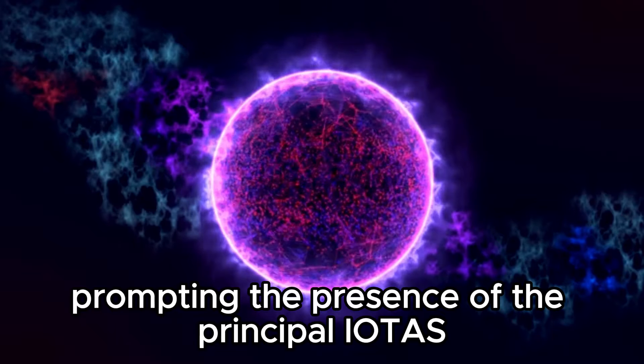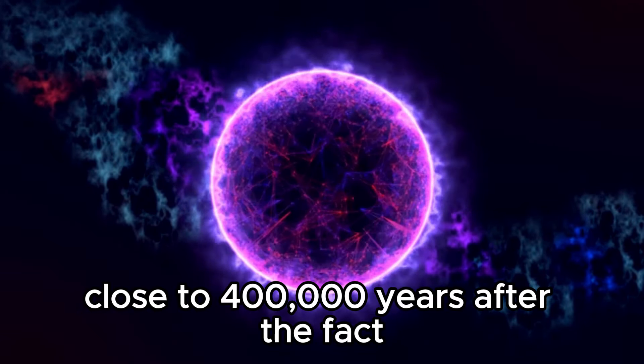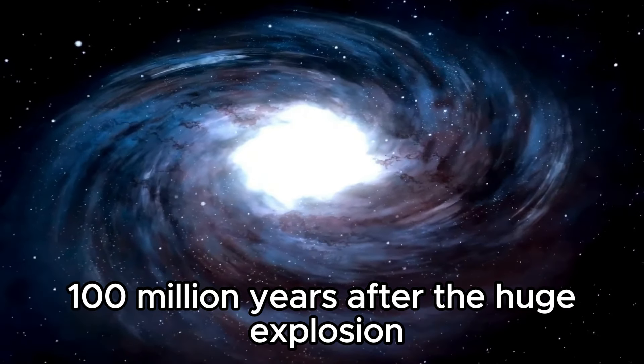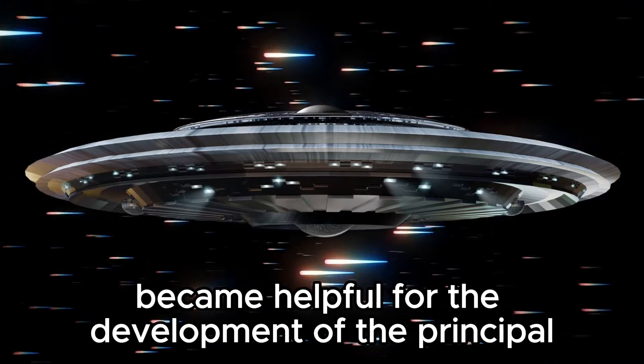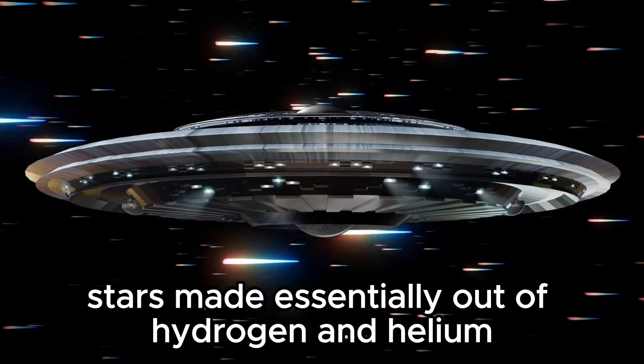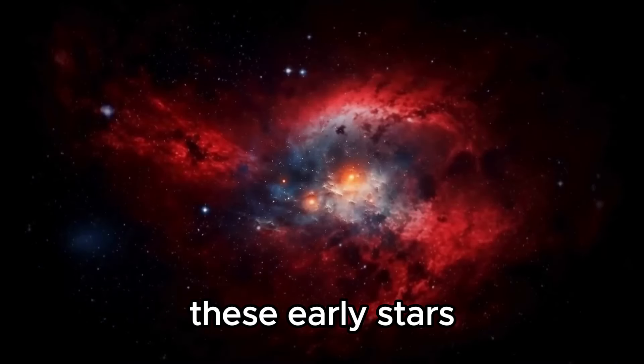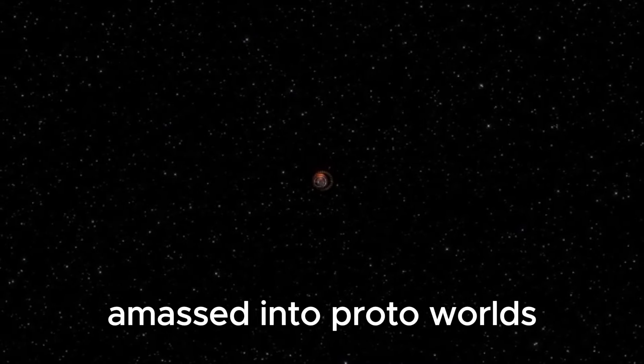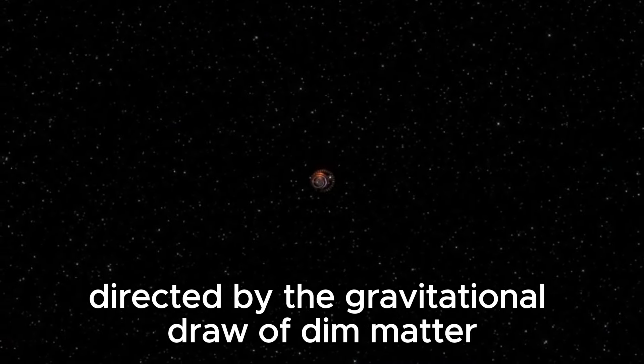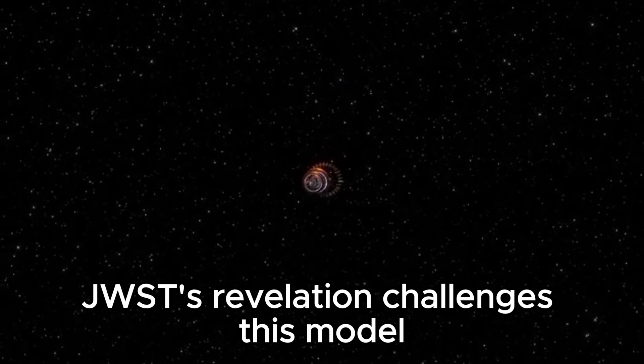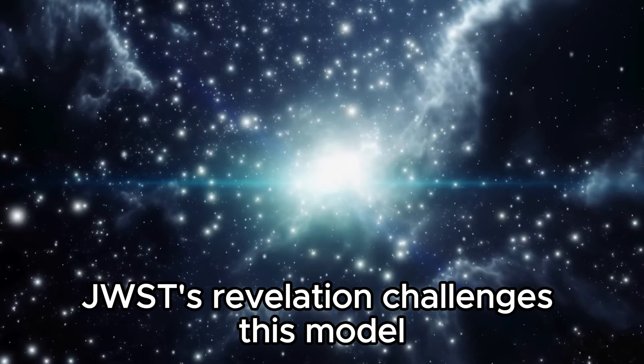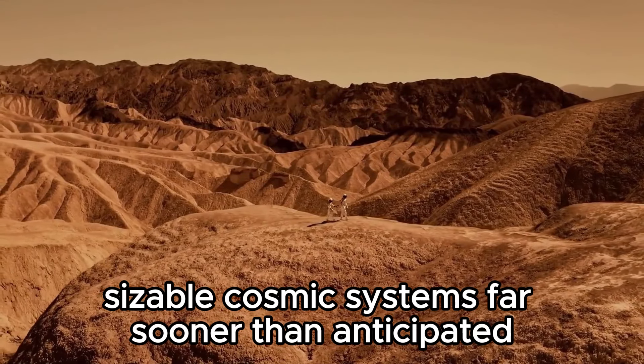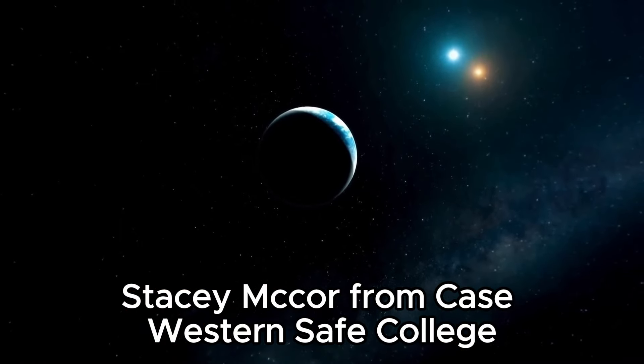To grasp this oddity, a brief return to early universe elements is fundamental. In the underlying minutes after the huge explosion, the universe was a hot, thick soup of early-stage particles. Over the long haul, as the universe extended and cooled, helium and other light components framed, prompting the presence of the principal iotas close to 400,000 years after the fact. Approximately 100 million years after the huge explosion, conditions became helpful for the development of the principal stars, made essentially out of hydrogen and helium. These early stars, bigger and more splendid than current stars, amassed into proto-worlds directed by the gravitational draw of dim matter.